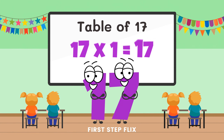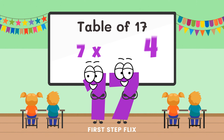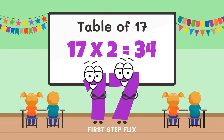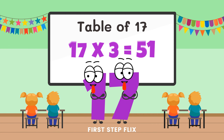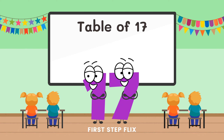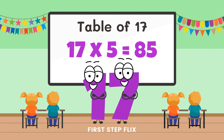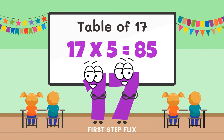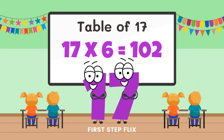Table of 17. 17 ones are 17. 17 twos are 34. 17 threes are 51. 17 fours are 68. 17 fives are 85. 17 sixes are 102.